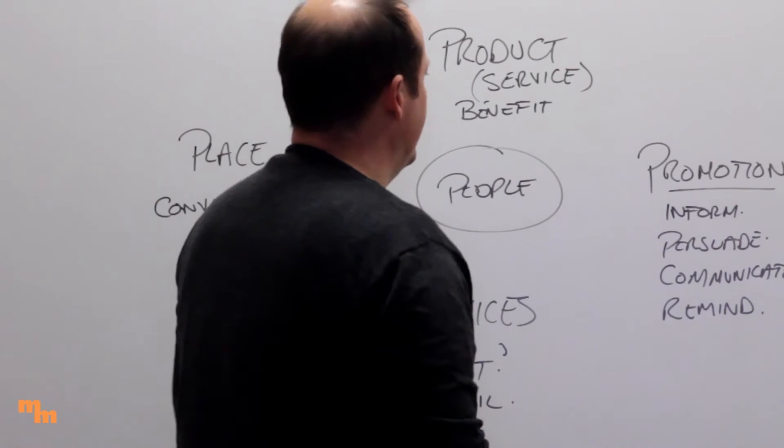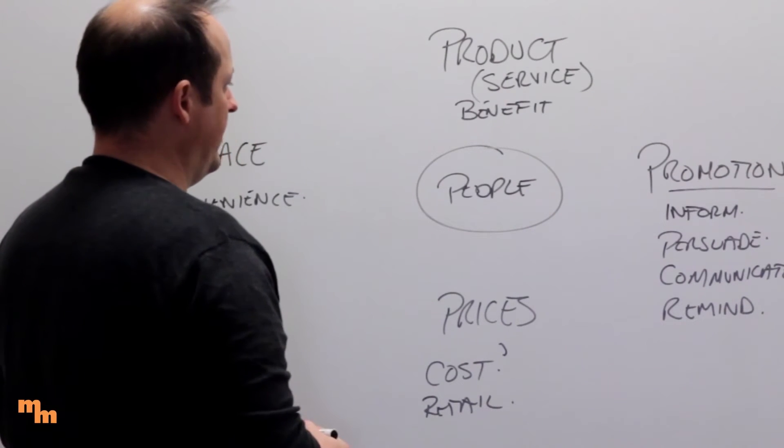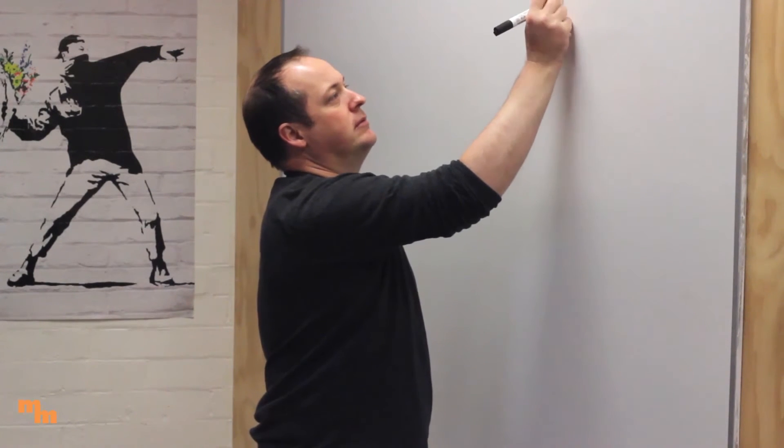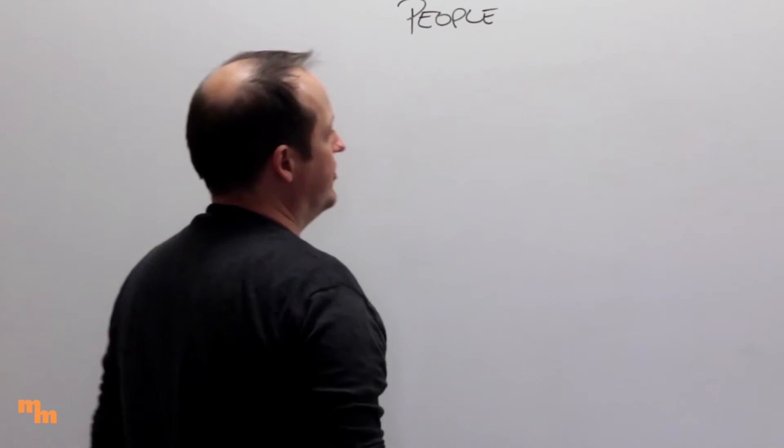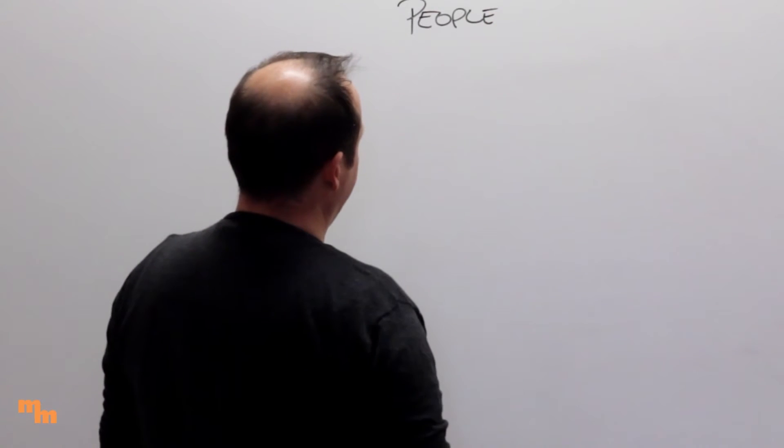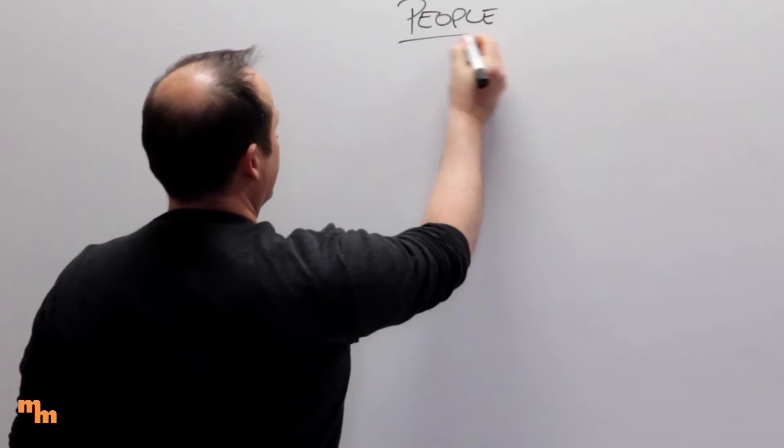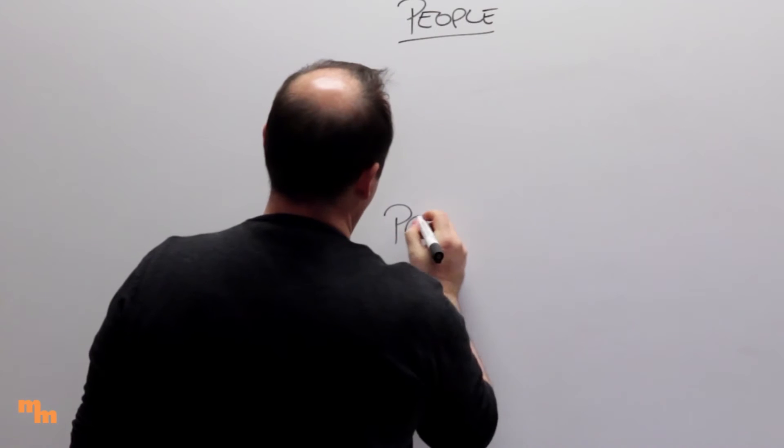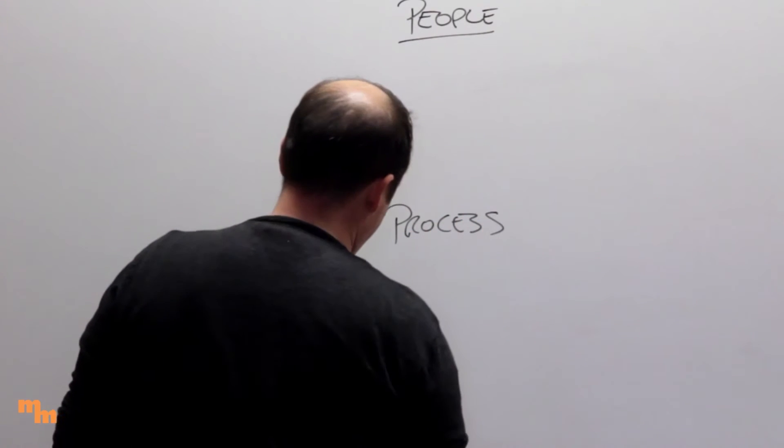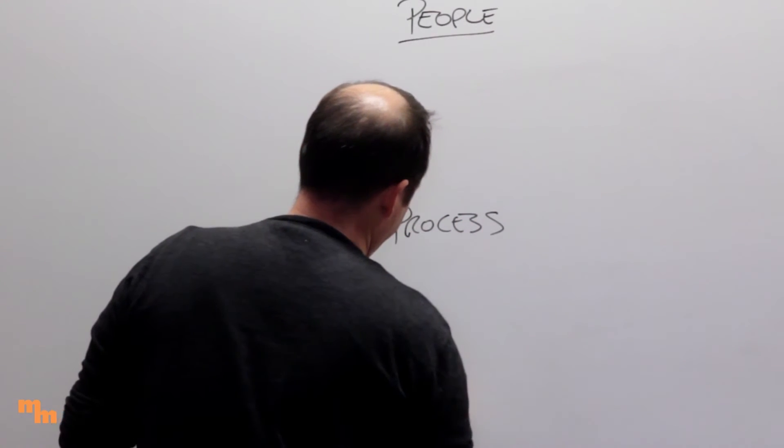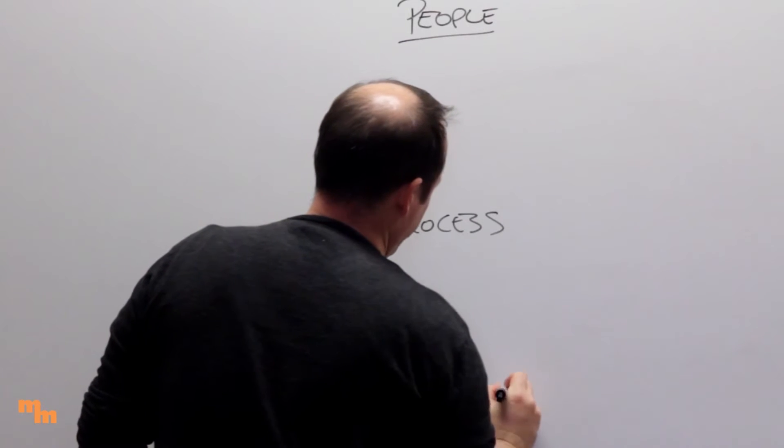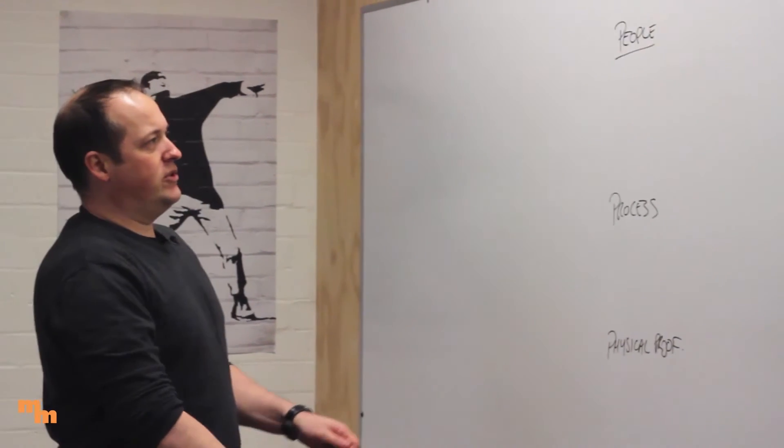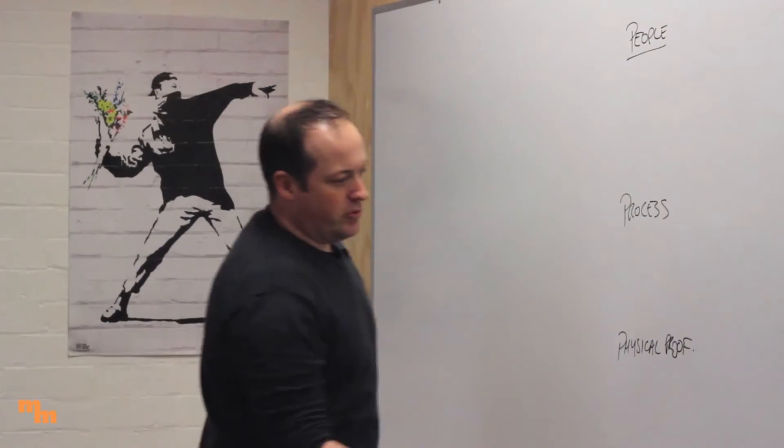Now I can extend that and turn this into the seven P's. Getting to the heart of the last bit, we started to talk about how people sat at the center of the marketing mix. We start to talk about the people. We also need to start thinking about the process, and lastly, we start talking about physical proof. When we're talking about physical proof, or some people call it physical evidence.